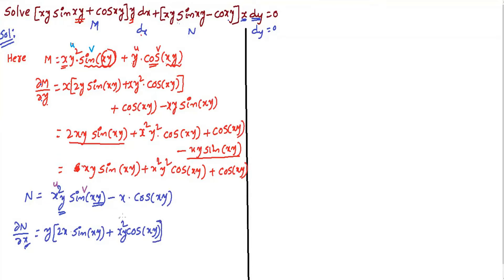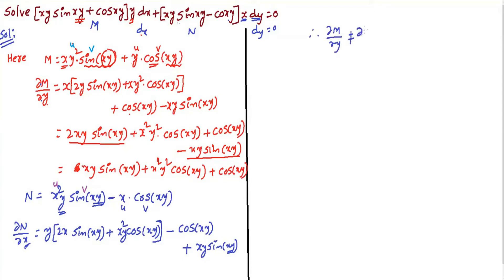Continuing ∂N/∂x: for the second part apply the UV rule again. Derivative of x is 1 times cos(xy), minus x times derivative of cos which is negative sin(xy) times y. By separating and simplifying the terms, we observe that ∂M/∂y is not equal to ∂N/∂x.